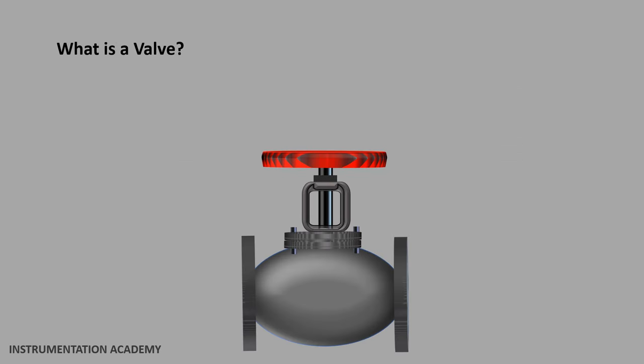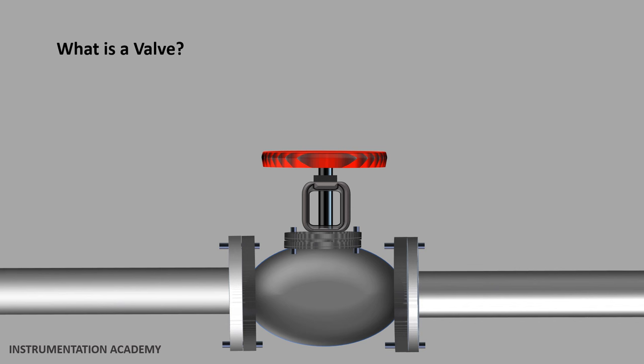First let's discuss what is a valve. A valve is a mechanical device which is usually installed in a pipeline. A valve has a movable part using which it controls the flow of liquid, gas or any loose materials flowing through the pipeline.